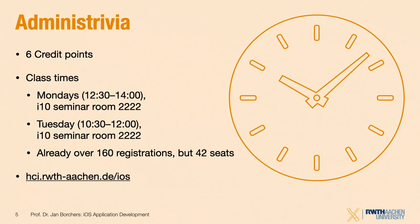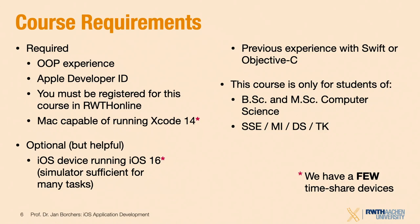What do you need for this class? We're not going to explain object orientation — you've all learned this already, so that's assumed. You'll also need an Apple developer ID, which just means signing up online. You also have to register for this class in RWTH Online. And to program iOS apps, you need a Mac.